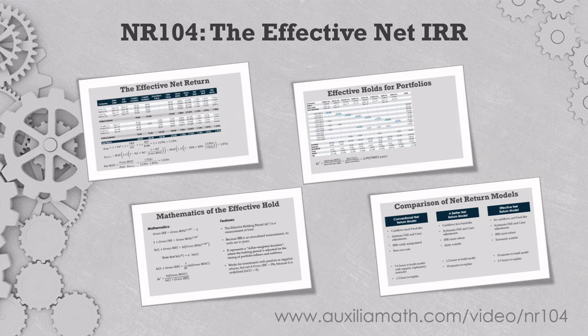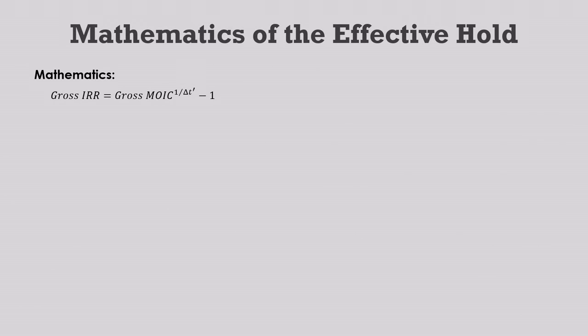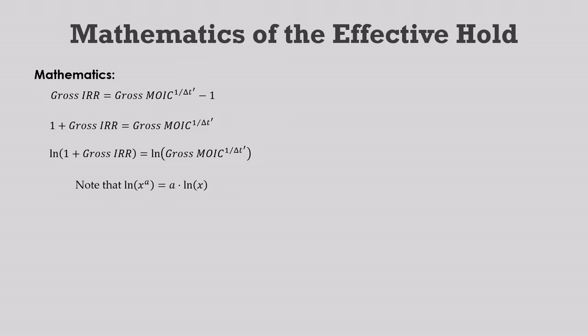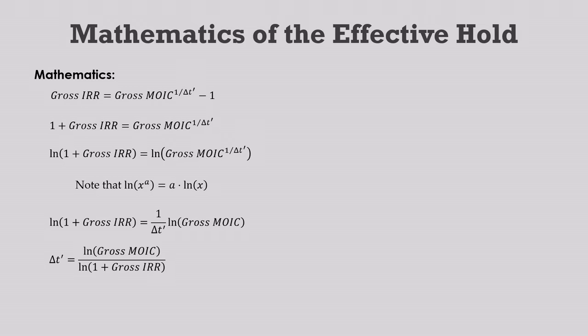Let's look at the effective holding period formula to see how the natural logarithms come into the picture. It starts with the gross multiple and gross IRR. When we plug them into the CAGR formula, we're inferring some kind of relationship between the gross IRR, which depends on time, and the gross multiple, which is independent of time. We know these are both real numbers — somewhere there's a cash flow spreadsheet that supports them, even if we don't have access to it. So the effective hold must be some kind of real and meaningful number that connects the two. A unique feature of natural logarithms is that log of x to the a equals a times log x. We can use that here to bring the 1 over delta t prime exponent out front, and after rearranging, we can prove that delta t prime equals the natural log of the gross multiple divided by the natural log of 1 plus the gross IRR.